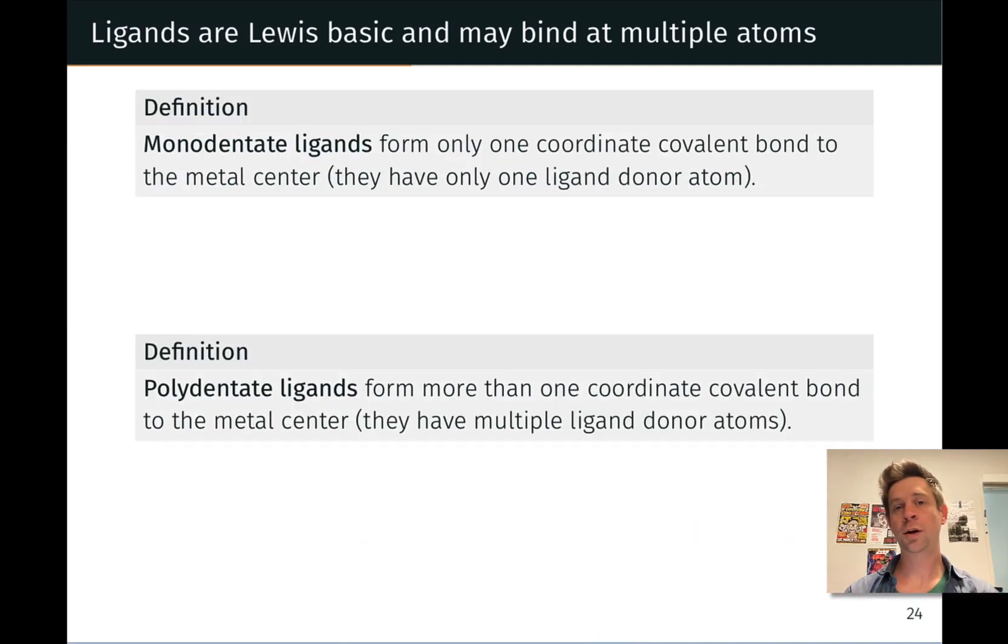Ligands with only one donor atom, or that form only one coordinate covalent bond with a metal center, are called monodentate. And the dentate suffix is kind of meant to invoke teeth, the idea of the ligand biting onto the metal center as a metaphor for coordination of a Lewis base to a Lewis acid.